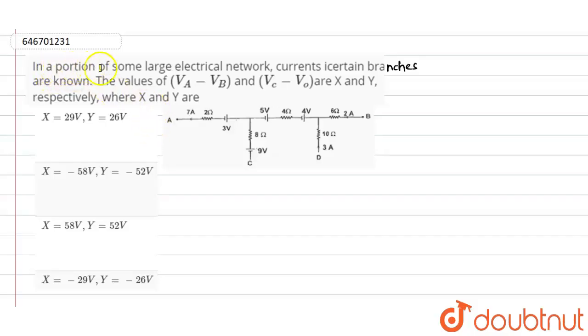It is given that in a portion of some large electrical network, currents in certain branches are known. So the value of Va minus Vb and Vc minus V naught are x and y respectively.